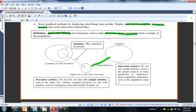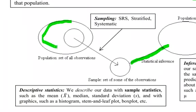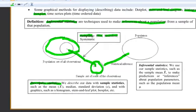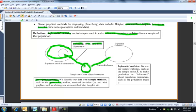Here is a nice review of sampling: you have this big population, and we usually spend time in statistics talking about how to sample — simple random sample, stratified sample, different kinds of sampling. From that sampling method you get a sample of values, and from there you can do your descriptive statistics: mean, median, standard deviation — you can just describe that sample.